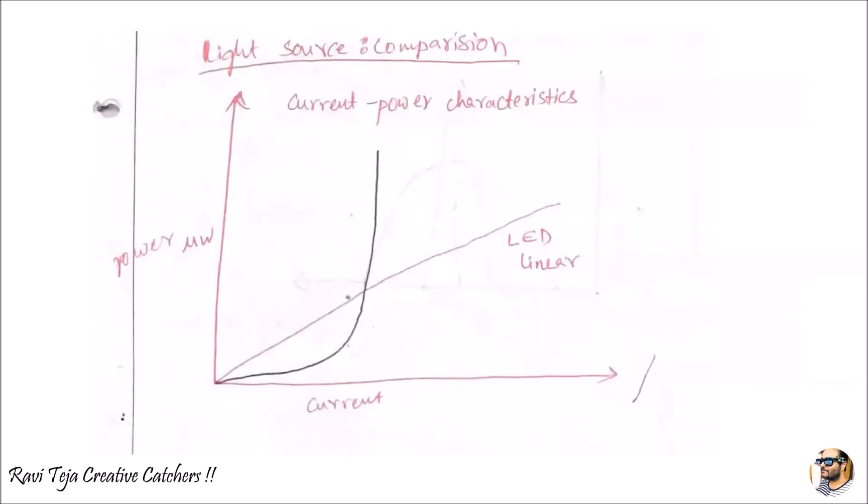This is a simple graph with respect to current as well as power. This is a current-power characteristics of the light source comparison. If you see over here, this x-axis is with respect to current and the y-axis is with respect to power.